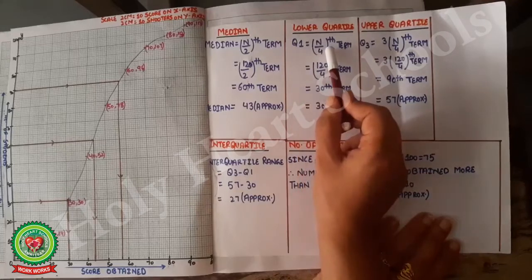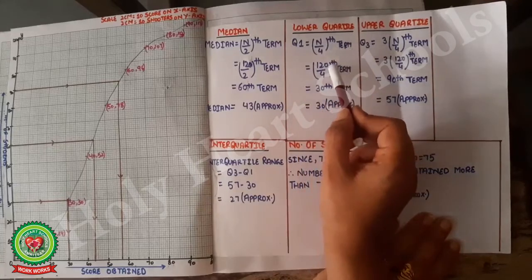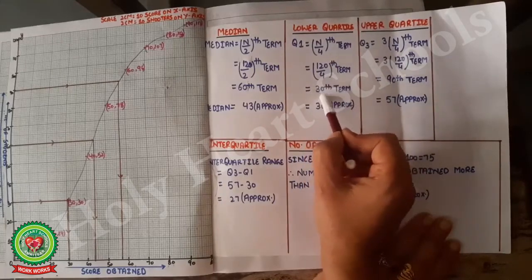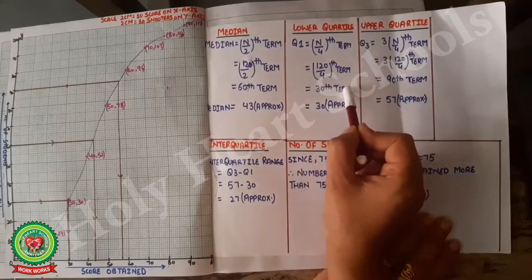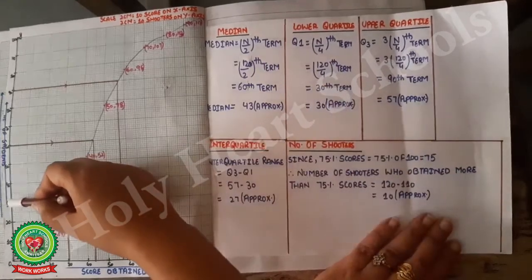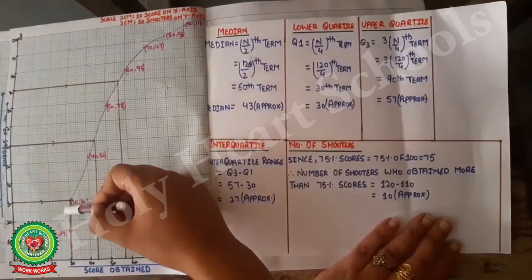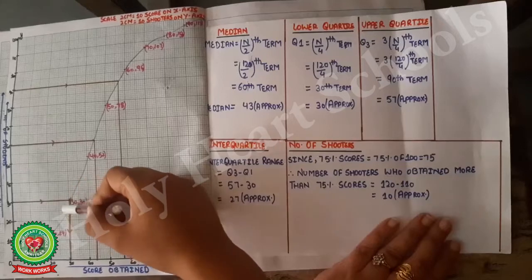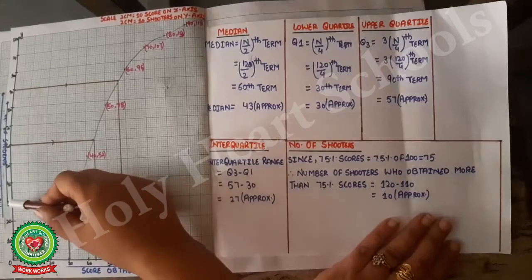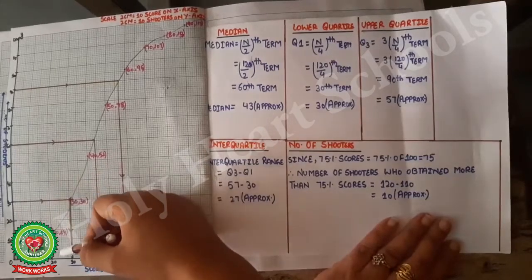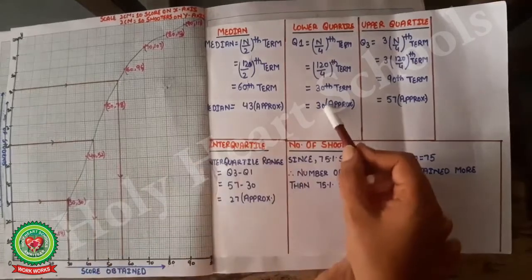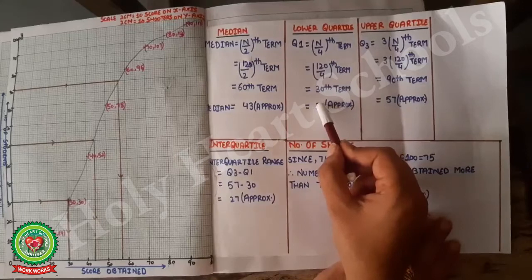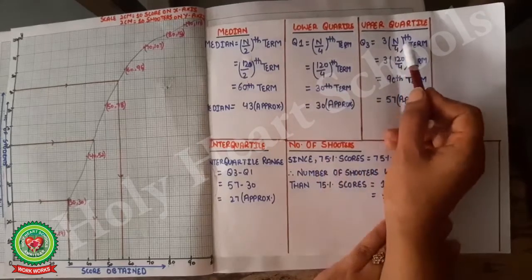Next we find the lower quartile. The formula is Q1 = (n/4)th term. Putting in n = 120 and simplifying, we get the 30th term. We find the 30th term from the graph in the same way — drawing the arrow from the y-axis down to the curve, then reading the x-axis. The answer for lower quartile Q1 is approximately 30.